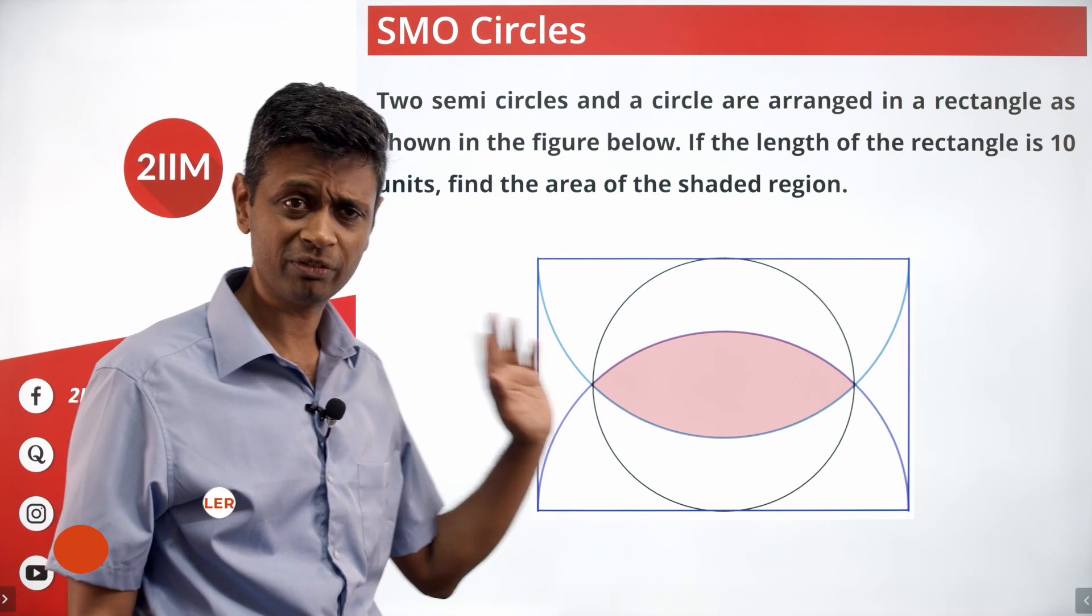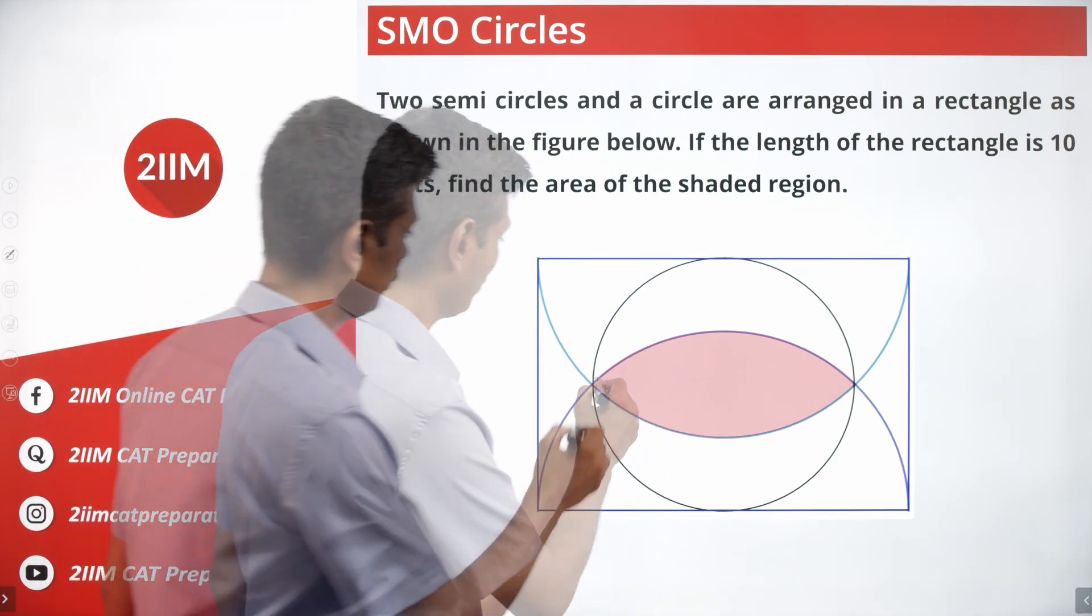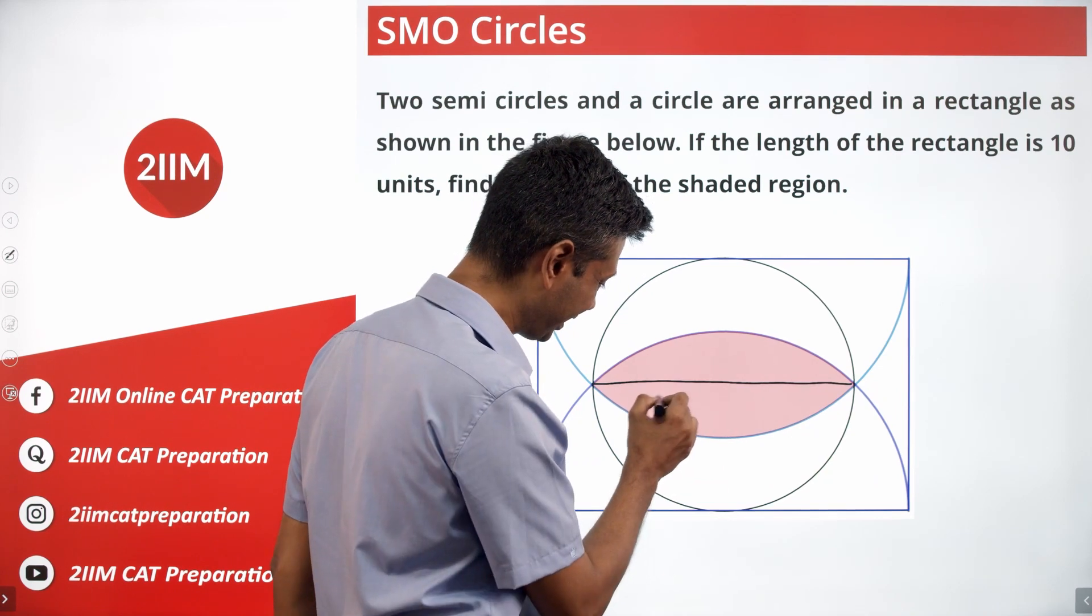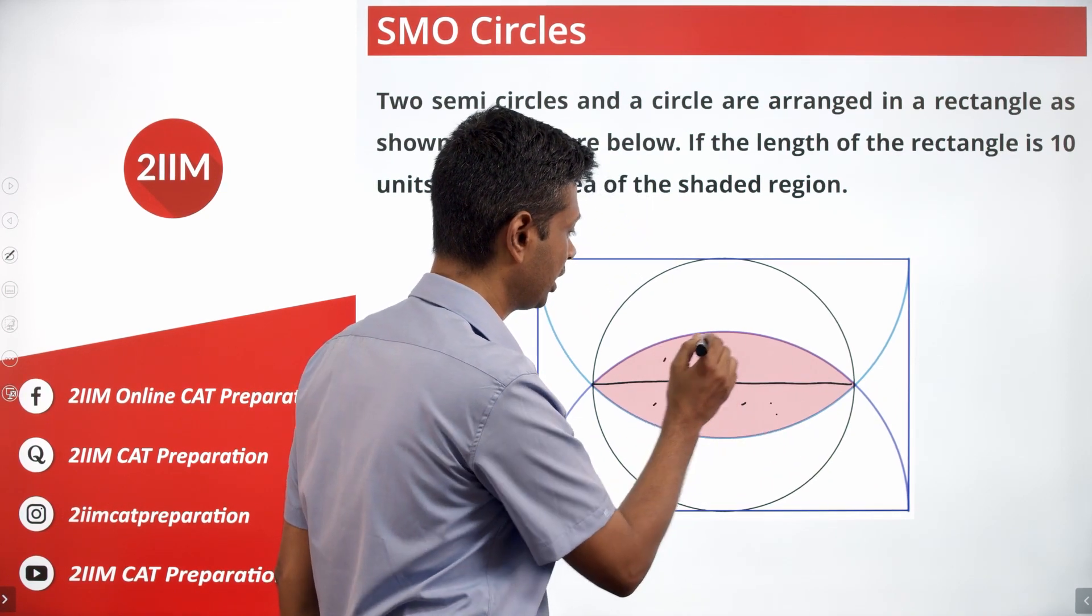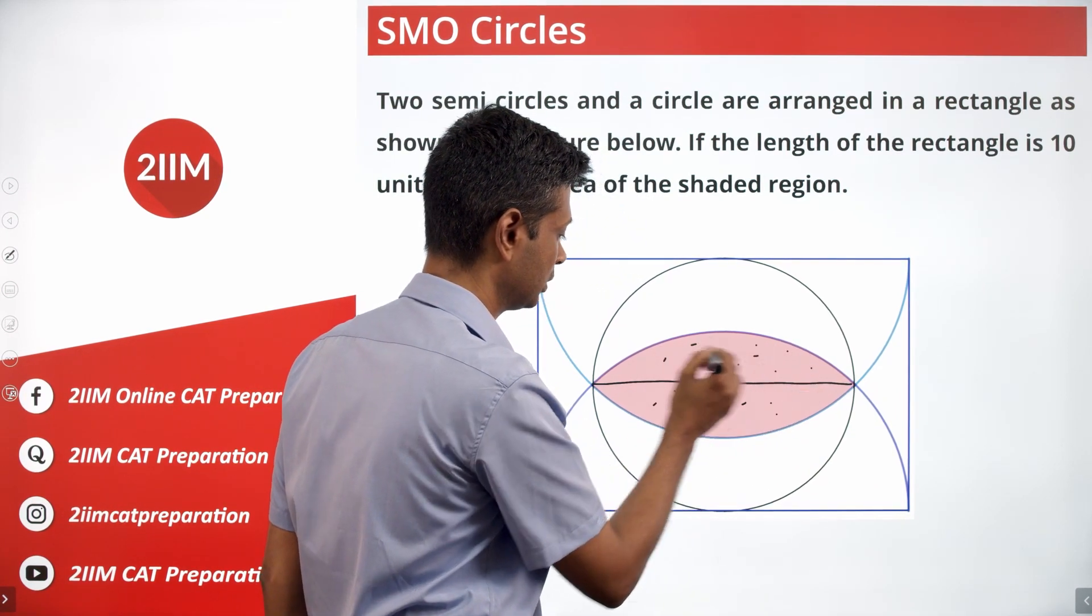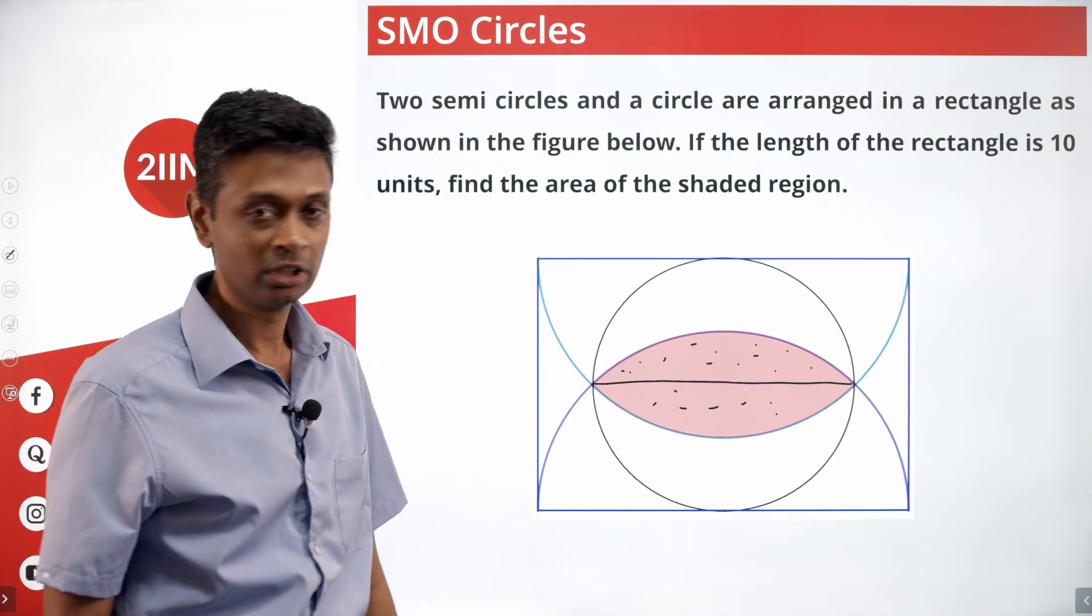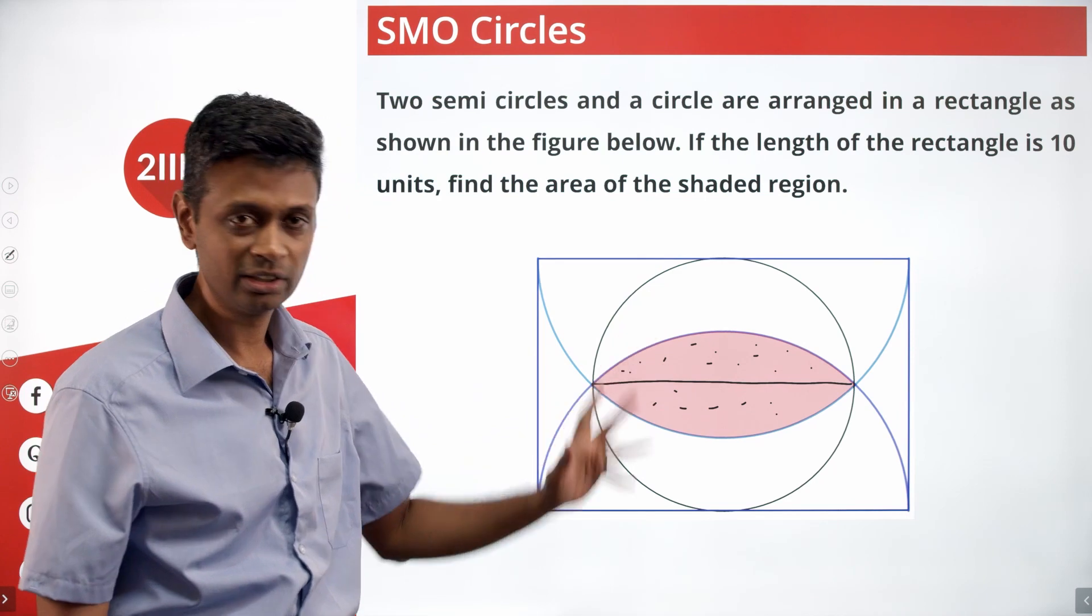Whenever you have this overlapping figure, first thing to note is if you cut across this, then this can be thought of as a segment. If you have something going for these two, linking these two circles, then we are good to go.